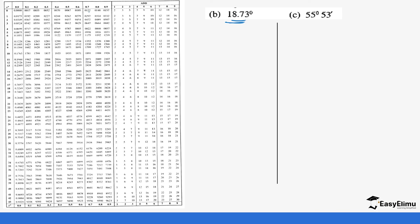18.73, we will go to 18.7, we go across up to 0.7 which will give us 0.3385, and 3 is in the add section which is 6, 0.0006.